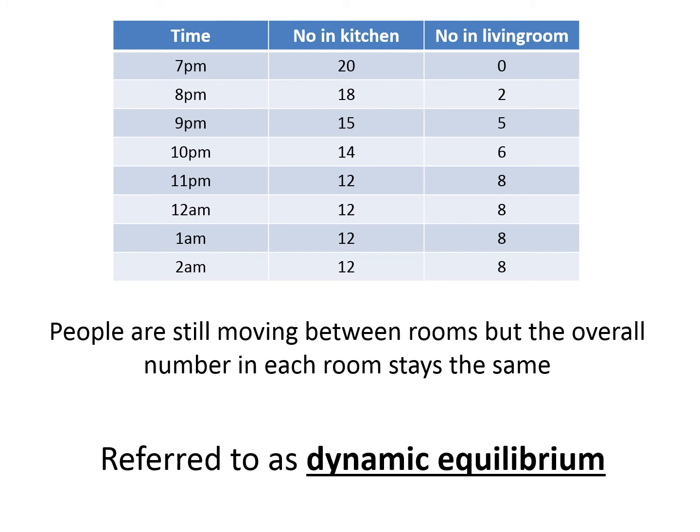So people are still moving between rooms, but the overall number in each room stays the same. This is called dynamic equilibrium. Now, the word dynamic might confuse you because dynamic means movement. However, what it's saying here is that the movement is happening. The molecules are still moving from reactants to products and products to reactants. But the equilibrium position is staying the same, staying constant.